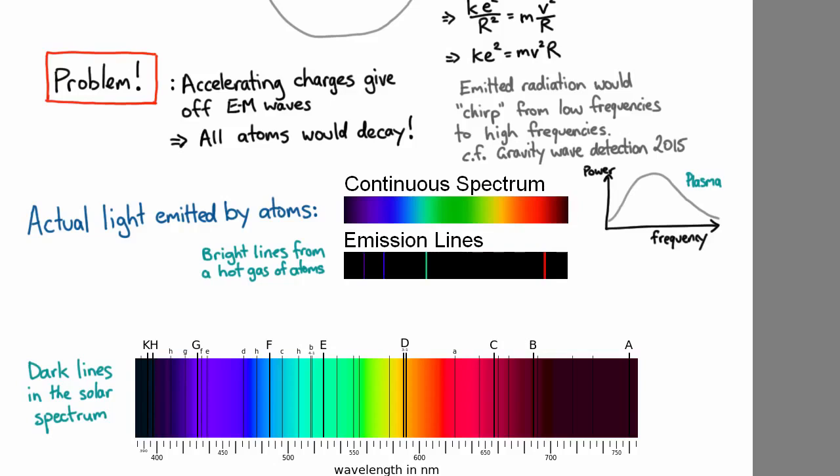This is rather odd because in the Rutherford model, electrons can rotate around at any frequency and therefore should emit radiation at any frequency. But instead, each kind of atom gives off a very specific fingerprint of lines.